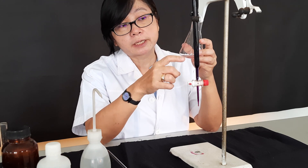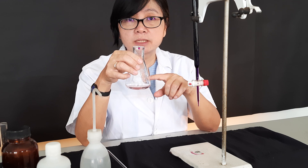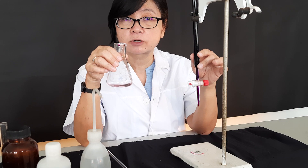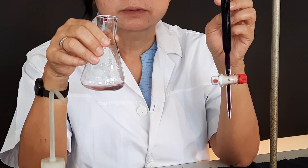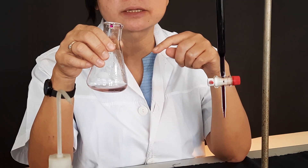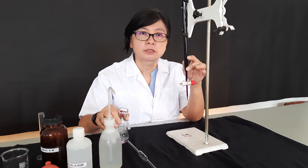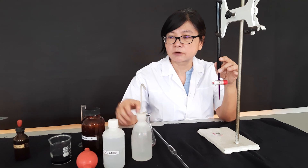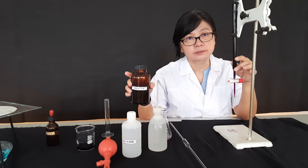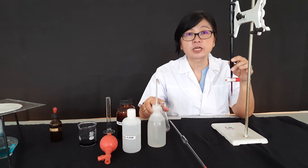We record this volume but we need a more accurate result, so we repeat the titration two or three times to obtain several volume readings and take the average. I will then show you the calculation to find the concentration of KMnO₄ using stoichiometry. That's all for today — thank you for watching.